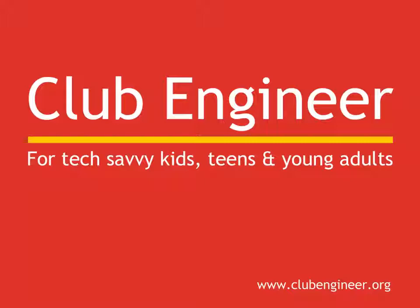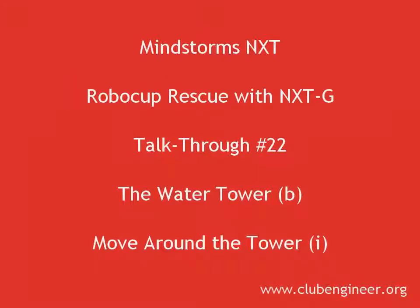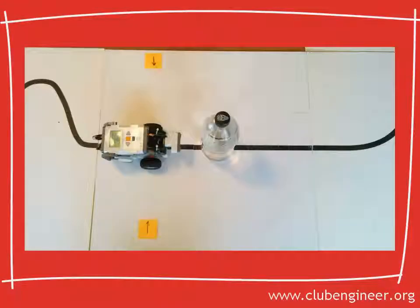Hi, Pete here from Club Engineer. In the previous talk through, we got the robot detecting the water tower and stopping. Now it's time to get the robot to move around the water tower. How hard can that be? Let's get started by having a look at the algorithm we're going to code.